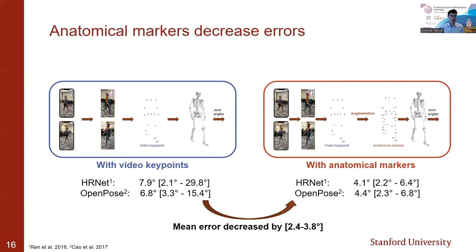What we found is that in both cases, using the predicted anatomical markers decreased the errors compared to using video keypoints. The mean error decreased by between two and four degrees, and the range of errors was much smaller using anatomical markers. The improvements were apparent for hip flexion, pelvis tilt, and lumbar flexion degrees of freedom, which were prone to large errors when using video keypoints due to the sparsity of keypoints between the shoulders and the hips.